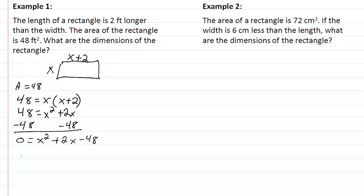So now we have zero equal to, well this will factor really easy. Factors of 48 that when we take the difference give us 2 are going to be a positive 8 and a negative 6.